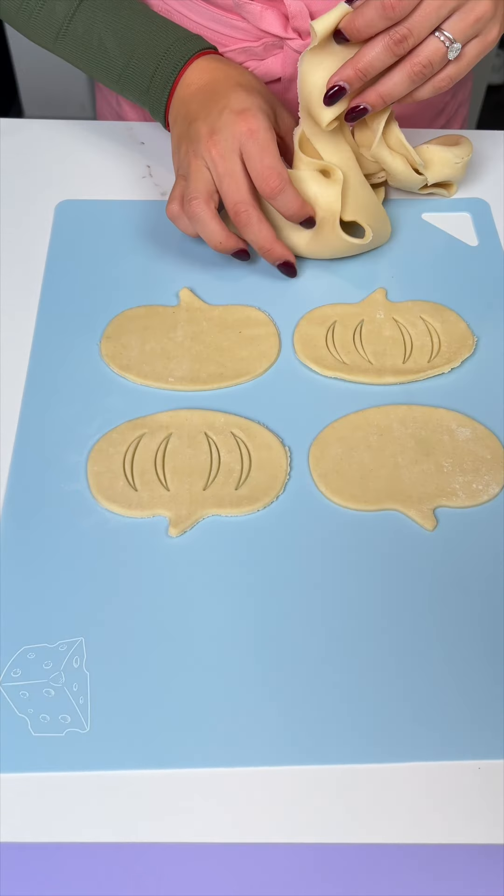All right, once that pumpkin pie filling is ready to go, what we're going to do now is you're going to go ahead and grab that fun little gadget. I'm going to lay it right here. So I'm going to grab that base just like that. The base will be the one that doesn't have the little designs. I'm going to make a little pocket kind of like a dumpling just like so. All right.